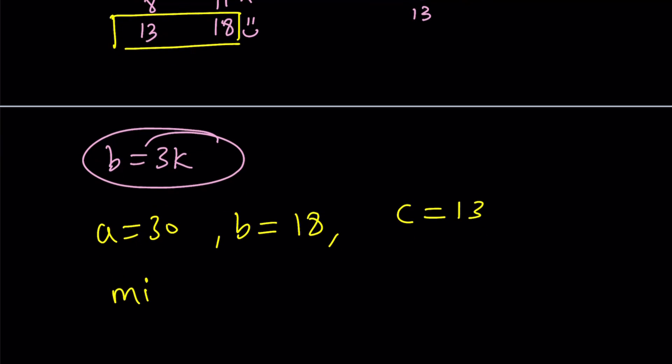So, the minimum, if I didn't make any mistakes, a plus b plus c is going to be 30 plus 18 plus 13, which is 61.